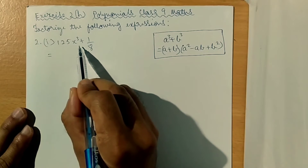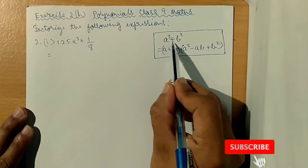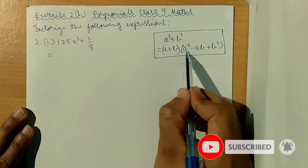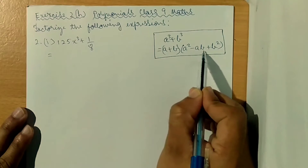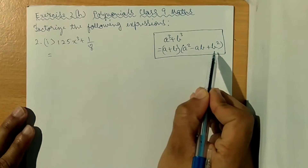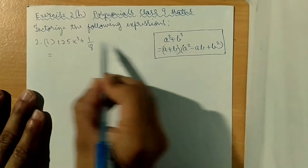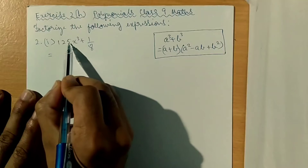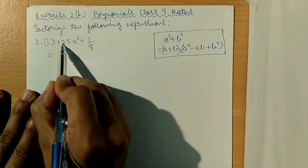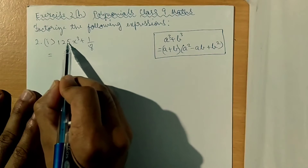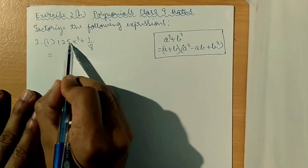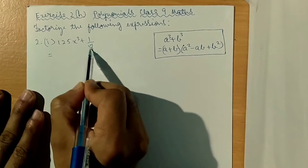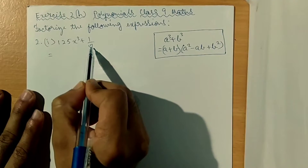To calculate this, we will use the formula: a cube plus b cube equals a plus b into a square minus ab plus b square.